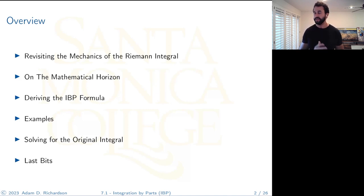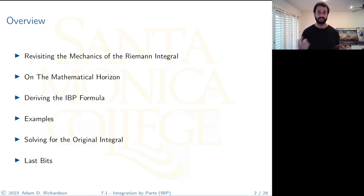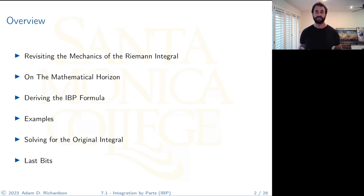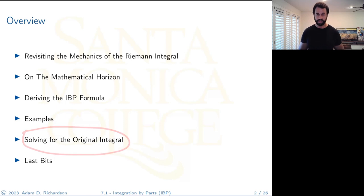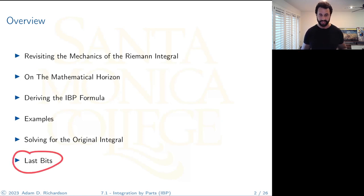Before we begin with the technique, we're going to revisit the Riemann integral — the definite Riemann integral — and look at the mechanics again. It's good to review, especially if you don't remember it from Calc 1. Then we'll take a short tangent about what's on the mathematical horizon, derive the formula, do examples, talk about solving for the original integral, and finish with some last bits.